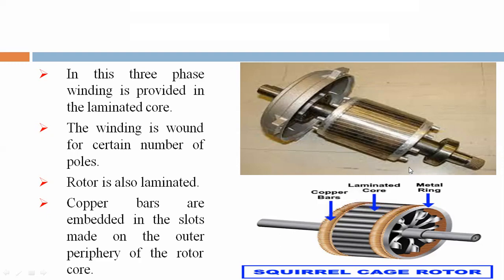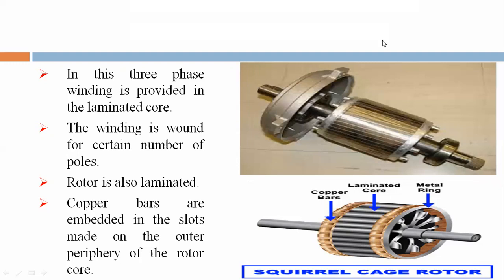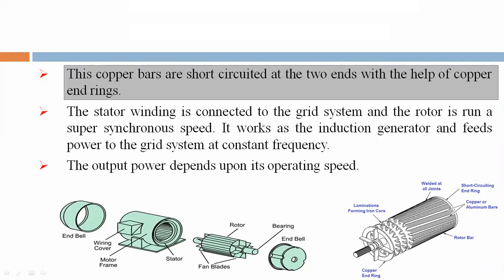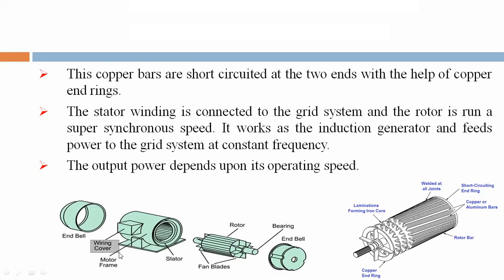See the pictorial view: here the stator winding is there and the squirrel cage rotor is there. Three-phase winding is provided in the laminated core. The winding is wound for a certain number of poles. The rotor is also laminated. Copper bars are embedded in the slots made on the outer periphery of the rotor core. These copper bars are short-circuited at the two ends with the help of copper end rings. Components visible include: laminated iron core, metal ring, short-circuited end rings, copper or aluminum bars, rotor bars, bearing, fan blades, stator, motor frame, and wiring covers.